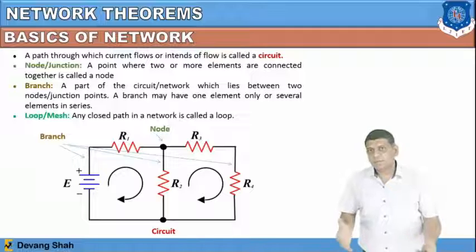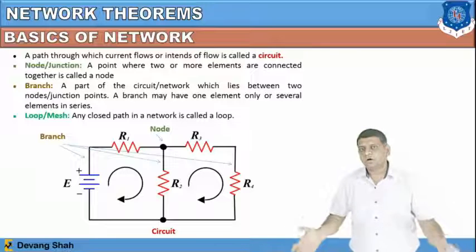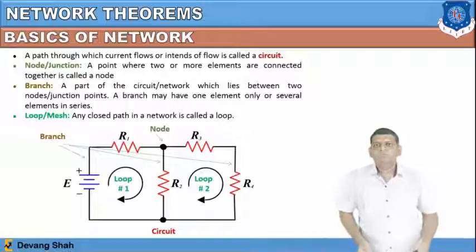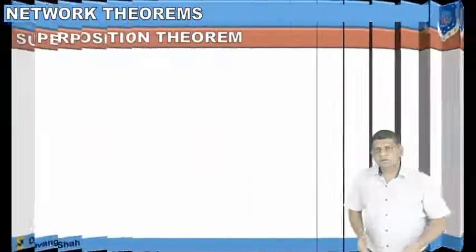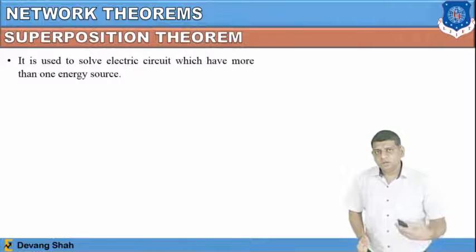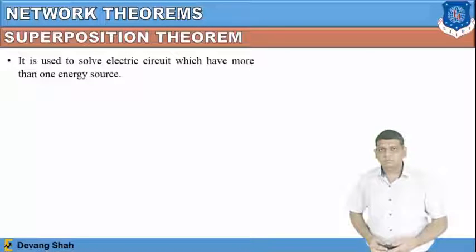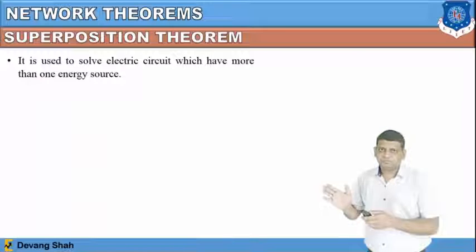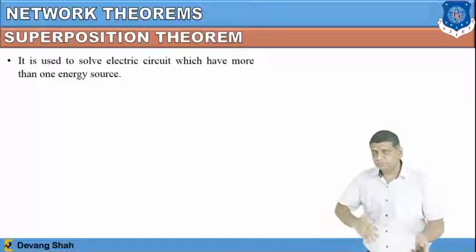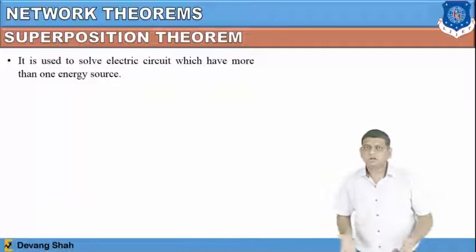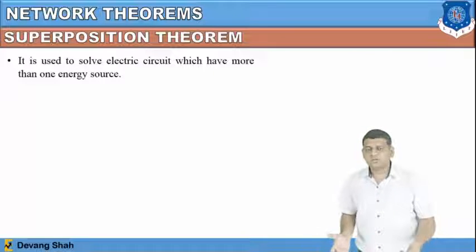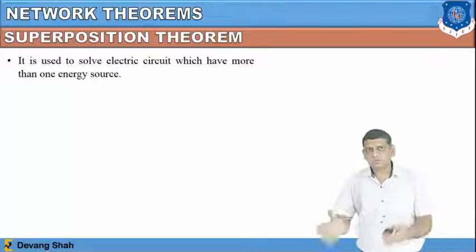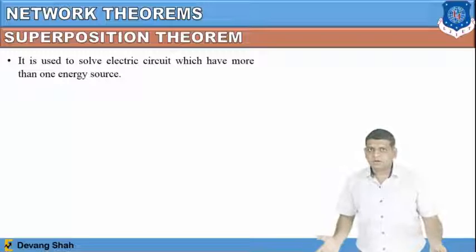A loop can also be considered as a mesh. Everything depends on the current — wherever current follows a closed path, that is defined as a loop. Now let's quickly discuss the Superposition theorem. We have already discussed Thevenin's theorem and Norton's theorem. These theorems are called circuit theorems because they are various methods to solve or analyze a complete circuit.